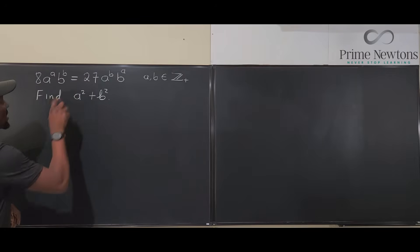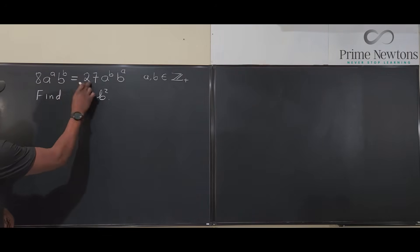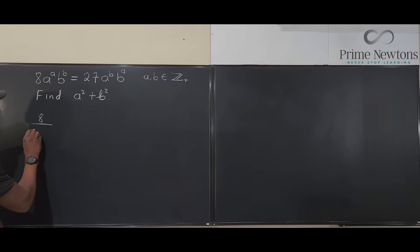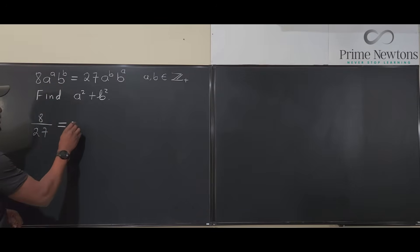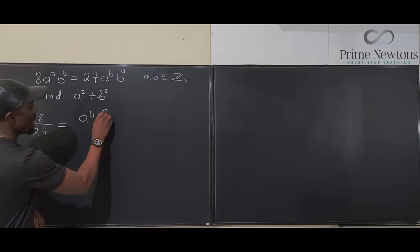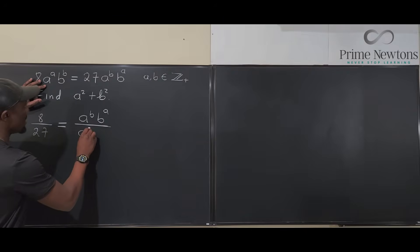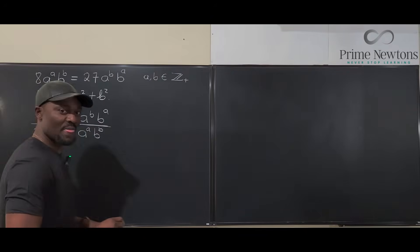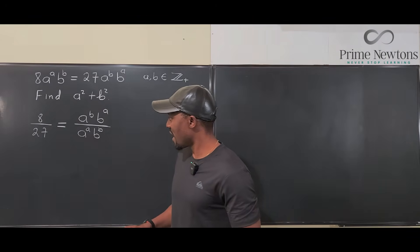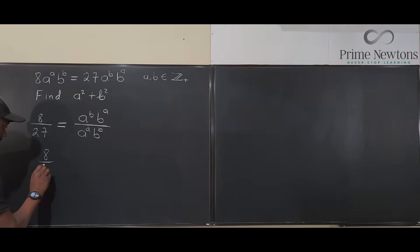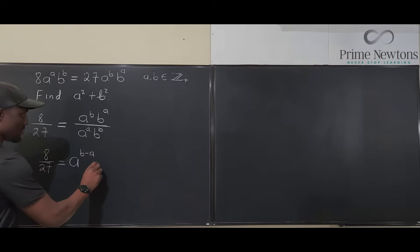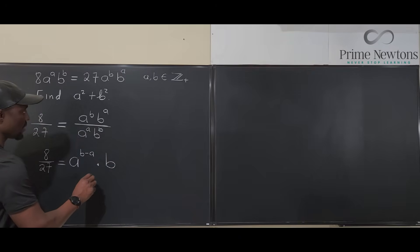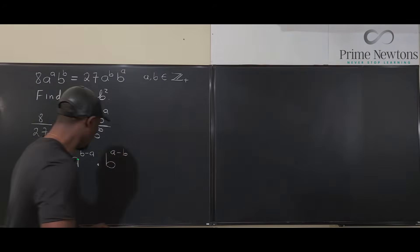Since we're dealing with positive integers, there are no zeros or negative numbers, so I'm not afraid of dividing by anything. I'm going to divide both sides by 27, giving me 8 over 27 on the left. Then I divide both sides by a to the a times b to the b, which gives me a to the b times b to the a over a to the a times b to the b. Applying laws of exponents, this becomes a to the b minus a, and b raised to the power a minus b.